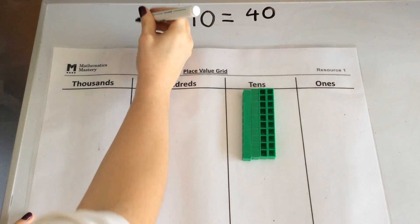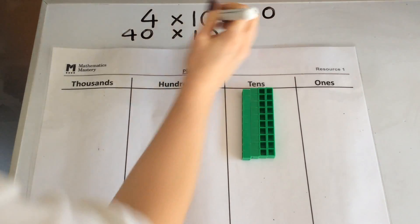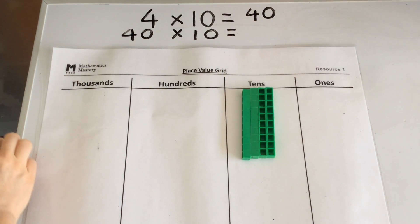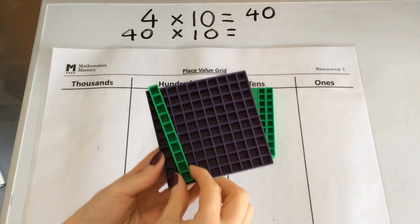If I wanted to make 40 ten times greater I know that each 100 block is made up of 10 rows of 10.